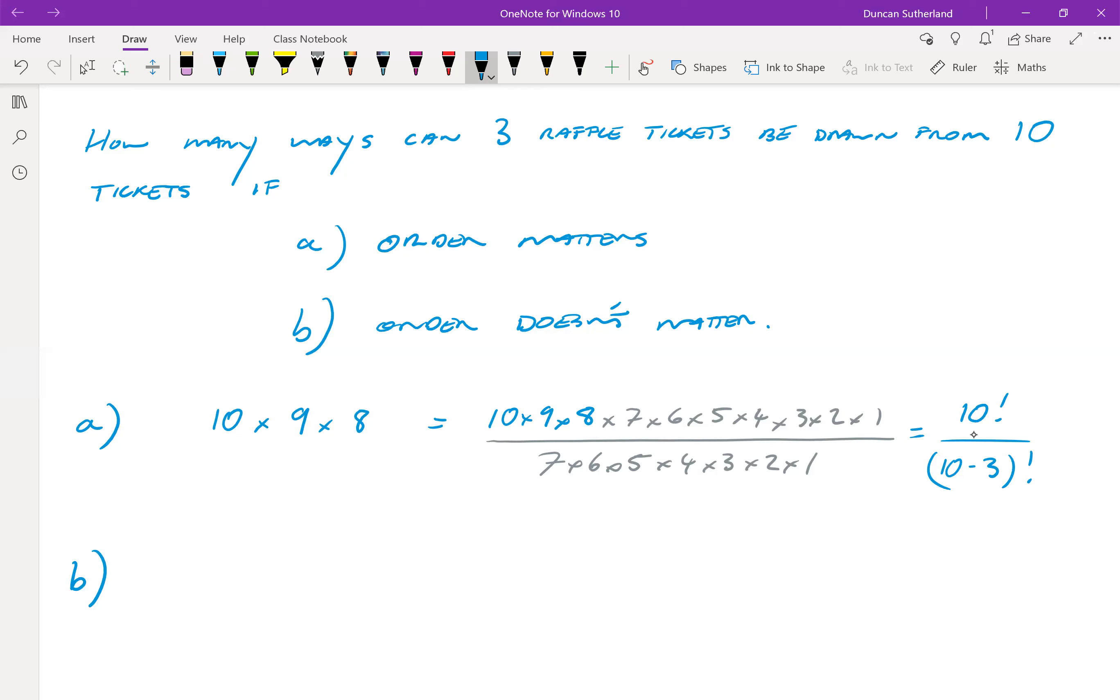So if we labelled all of our 10 participants A, B, C, D, E, etc., we can see that A, B, C is the same as C, B, A, and so on. So there's three factorial ways to arrange three things. So there's three factorial ways of arranging these different combinations.